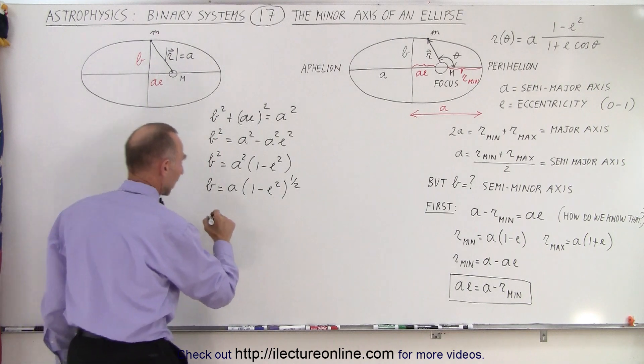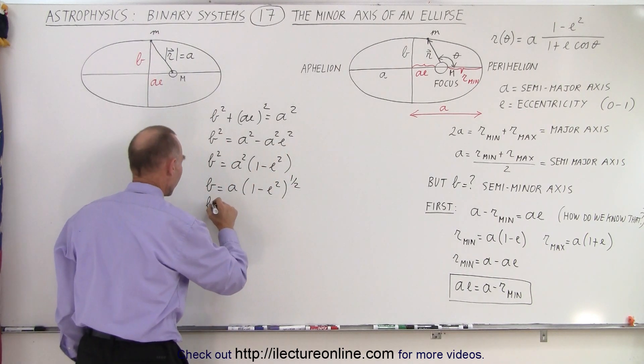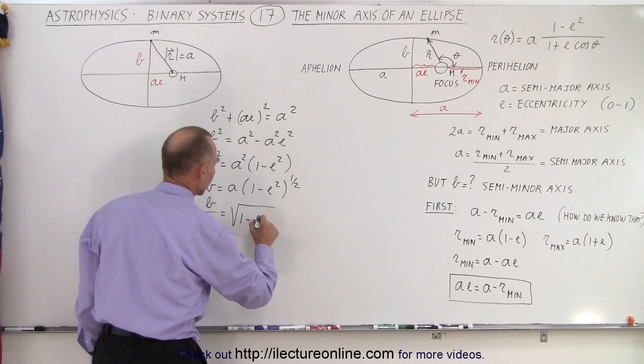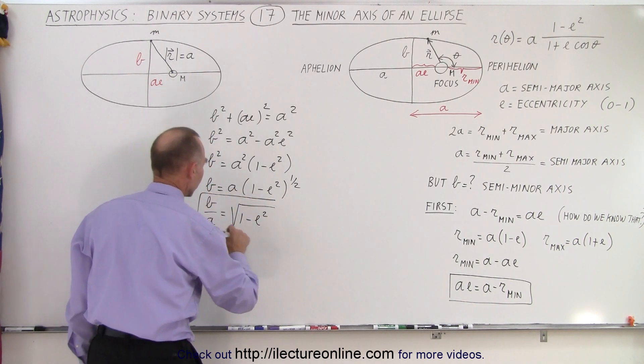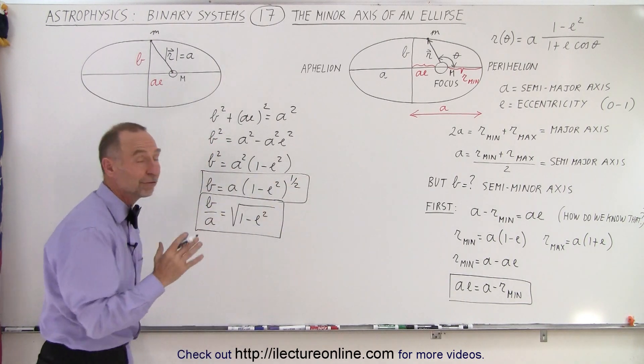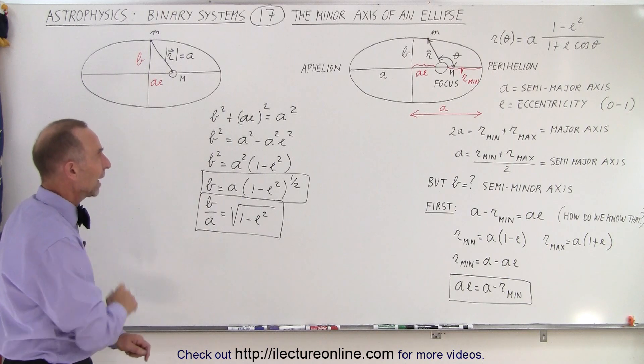So then we can say that the ratio of B over A is also equal to the square root of (1 - e²). So that's how we can define B. We can define B like this or we can define B like that. So that's how we define the semi-minor axis.